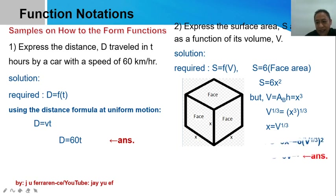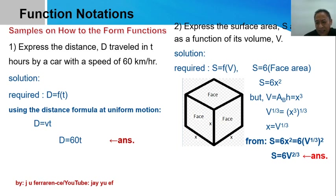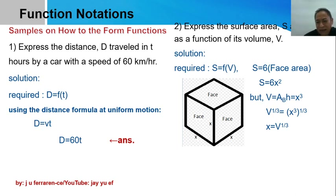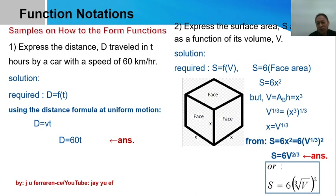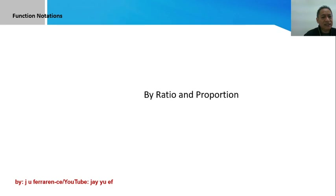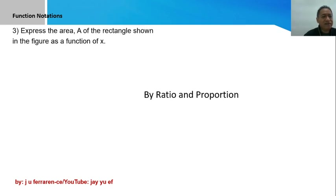Now go back to S equals 6x squared. Replace x with v to the power one-third, then raise that to the power two. Applying the law of exponents: one-third times two gives a power of two-thirds. Writing that in radical form: S is equal to 6 times the square of the cube root of v. That's the second problem — we can form functions from geometric figures.